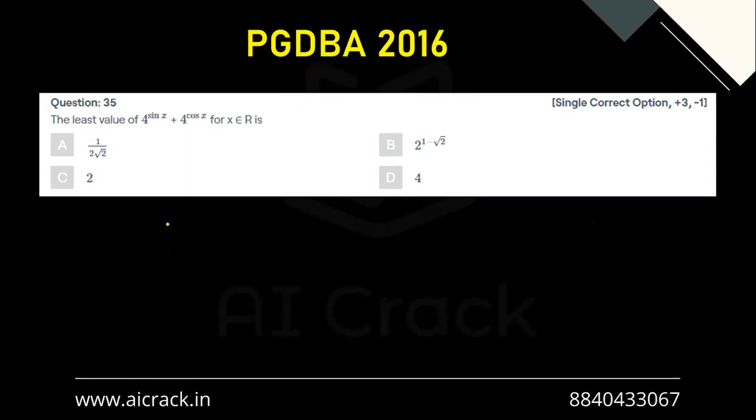Hi everyone. Let's solve question number 35. The least value of 4^(cosec sin x) + 4^(cosec cos x) for x belongs to R.